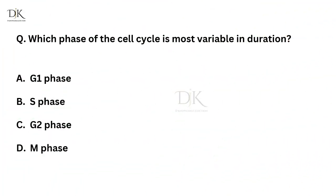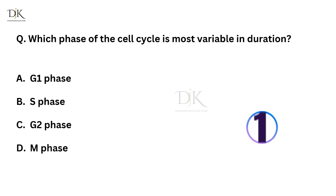Which phase of the cell cycle is most variable in duration? Right answer is G1 phase.